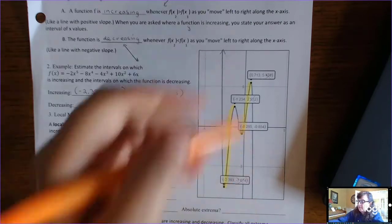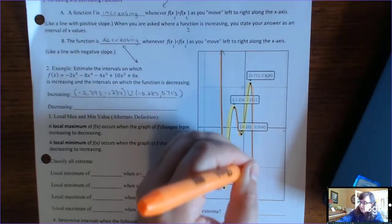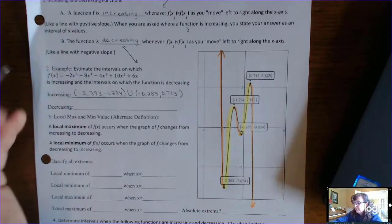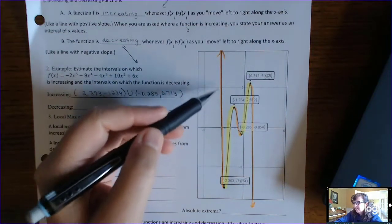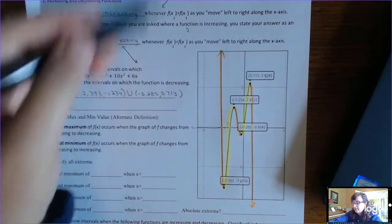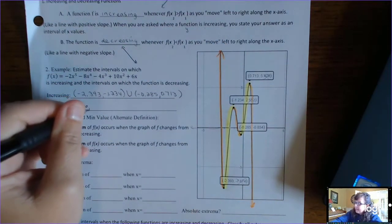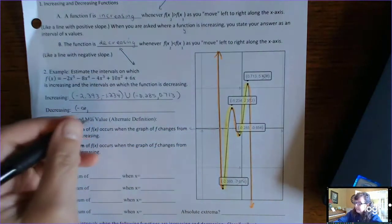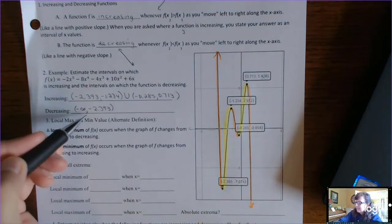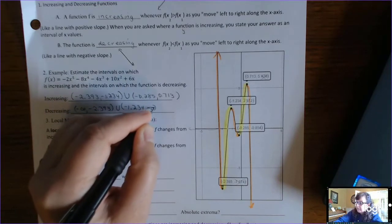Where is the function decreasing? Using the orange highlighter, the function is going down as you go left to right here and here and here. We want x-values making the function decrease — going from smaller to larger. It looks like it's going straight up and down, but we're talking about the x-values. The x-values that make this function decrease are from negative infinity to x = negative 2.393, union from x = negative 1.234 to x = negative 0.285.